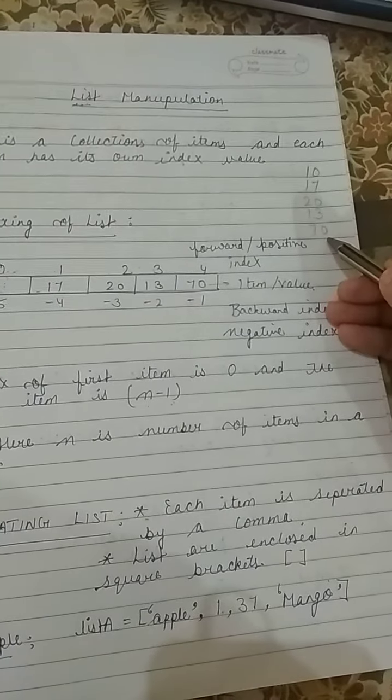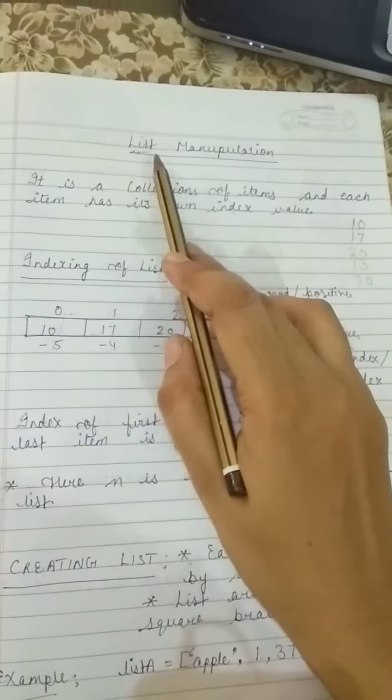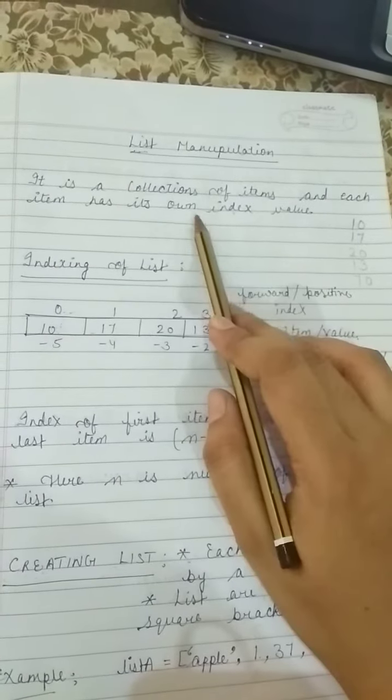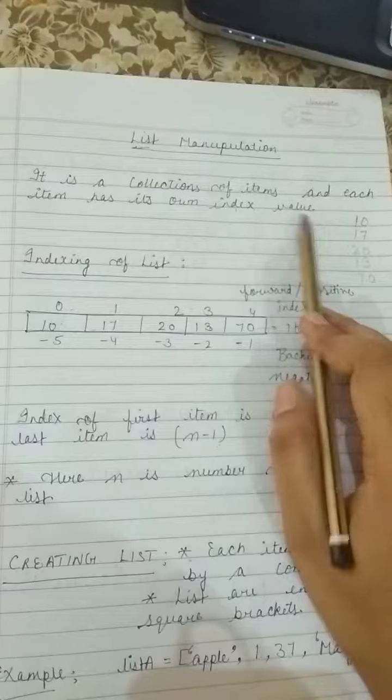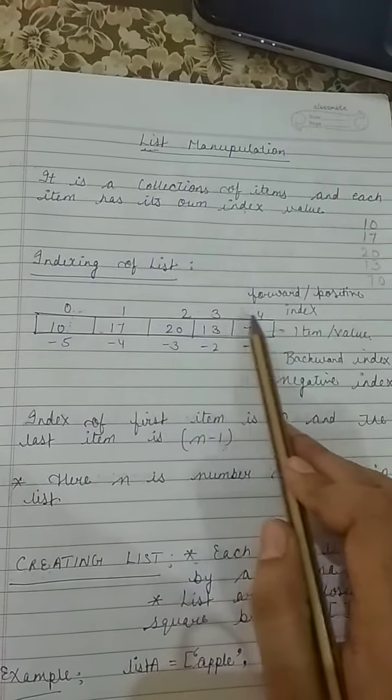In general, this is our list. But in Python, every list item has its own index value. Like here: 0, 1, 2, 3, 4.